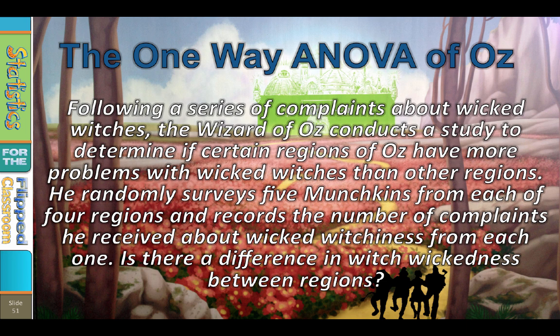Here is the research story for our one-way ANOVA. Following a series of complaints about wicked witches, the Wizard of Oz conducts a study to determine if certain regions of Oz have more problems with wicked witches than other regions. He randomly surveys five munchkins from each of four regions and records the number of complaints received about wicked witchiness from each one. Is there a difference in witch wickedness between regions?